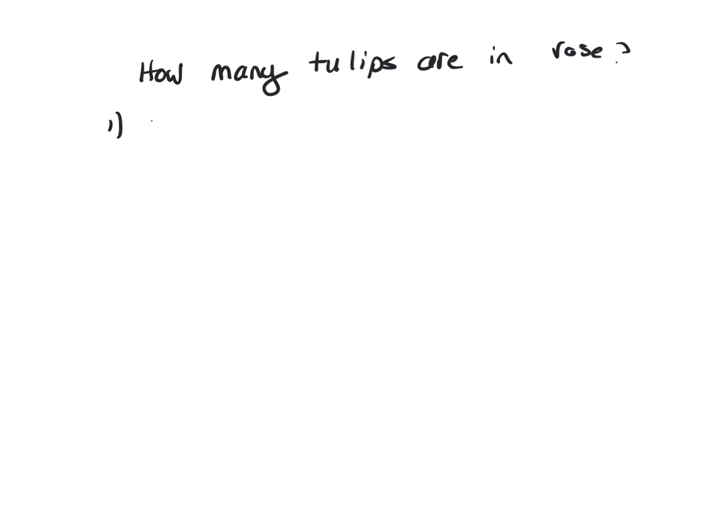The number of roses, I'm going to let R be the number of roses, is four times the number of tulips. That would be four times T. So that doesn't work. You can't solve for T. T might be two, T might be three, six, whatever. It doesn't work.